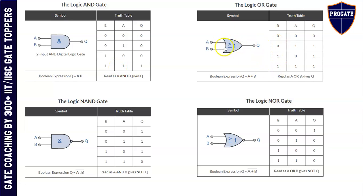Logical OR gate. This is the symbol. The expression is Q is equal to A plus B, read as Q is equal to A or B. If you see the truth table, output is high if any one of the two inputs is high. Output is low only when both inputs are low. If both inputs are high, or one of the inputs is high, then output will be high.